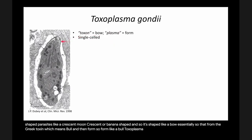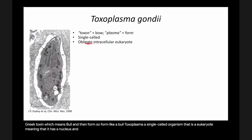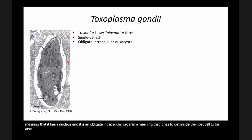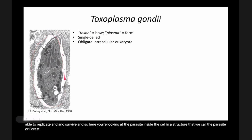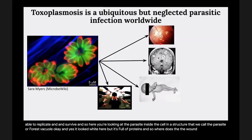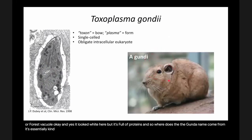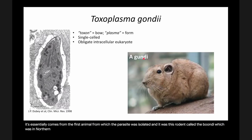Toxoplasma is a single-celled organism that is a eukaryote, meaning it has a nucleus. It is an obligate intracellular organism, meaning it has to get inside the host cell to be able to replicate and survive. Here you're looking at the parasite inside the cell in a structure called the parasitophorous vacuole. The name 'gondii' comes from the first animal from which the parasite was isolated — a rodent in Northern Africa.